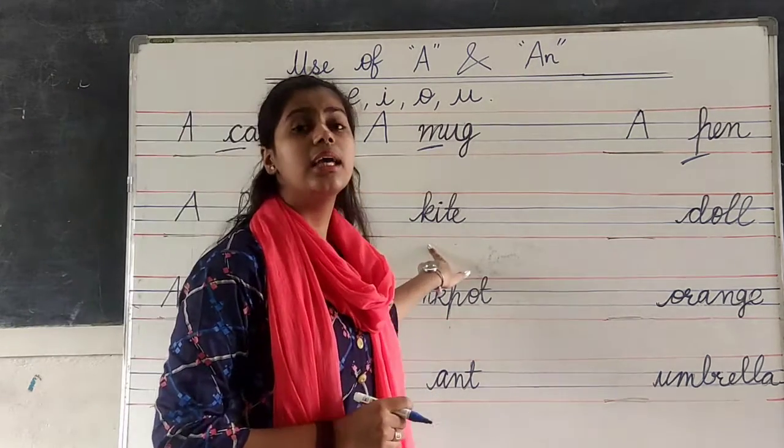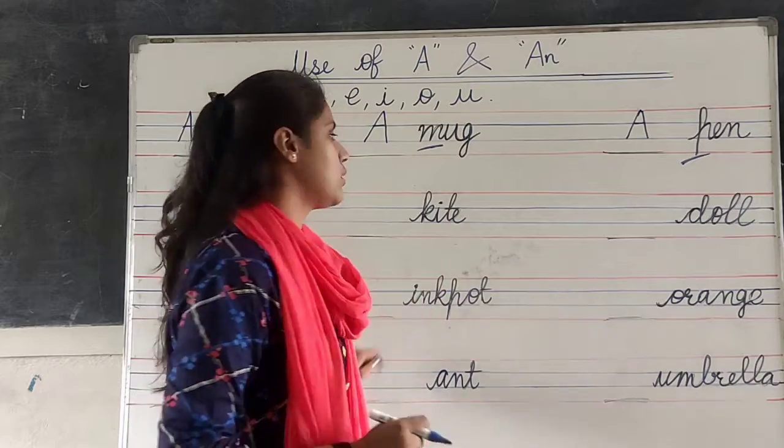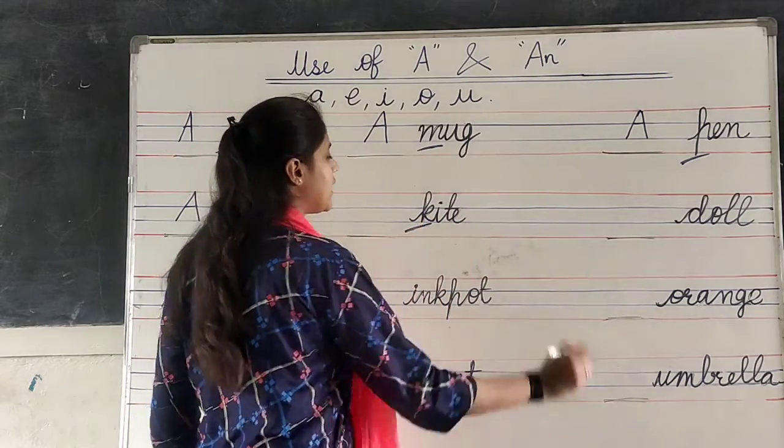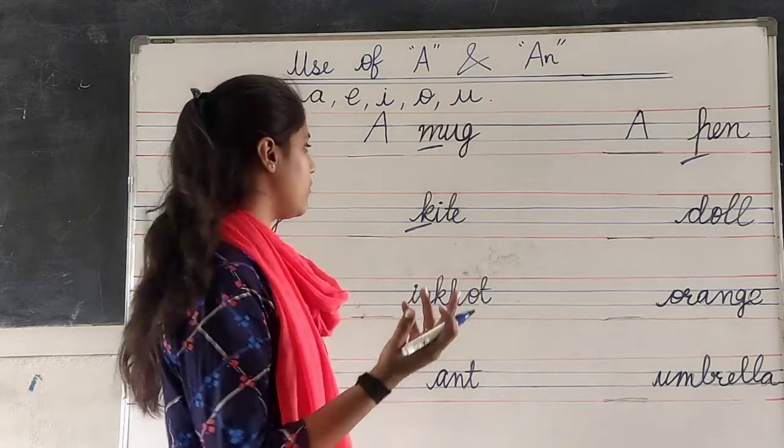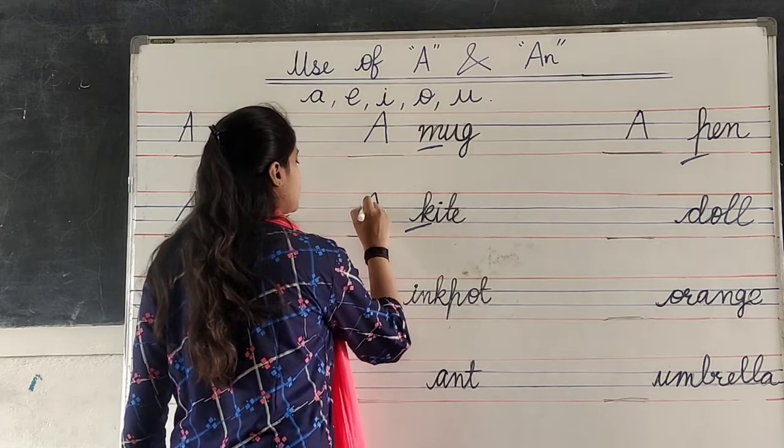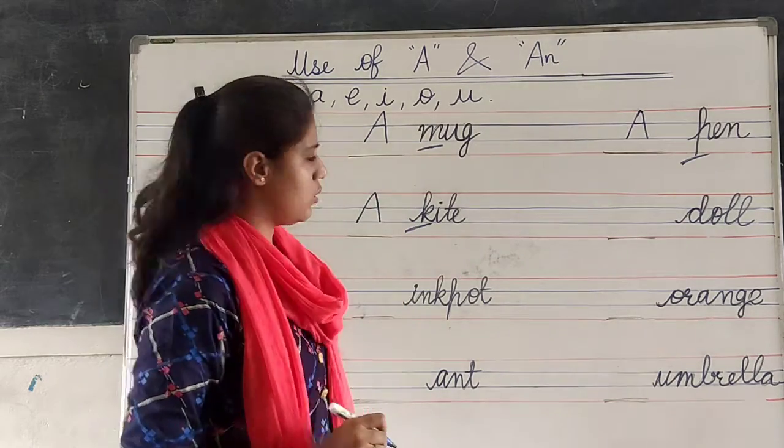Next, kite. K, I, T, E. Kite. First letter is K. Then we have to write A. Because, it is not a vowel.